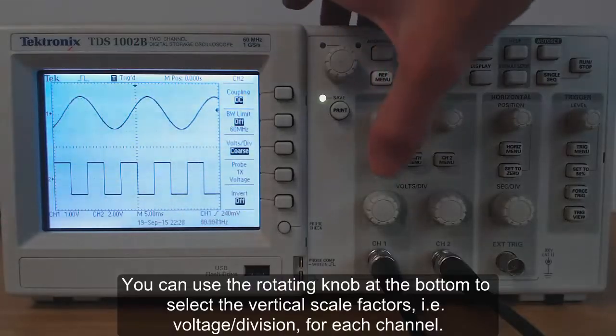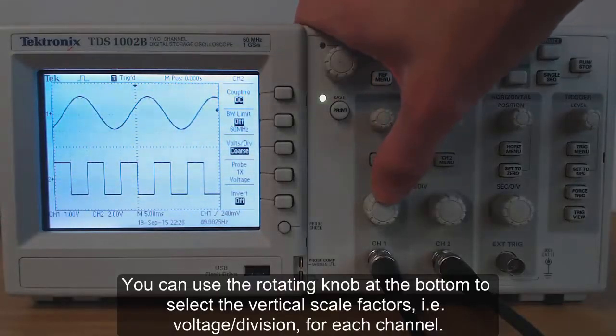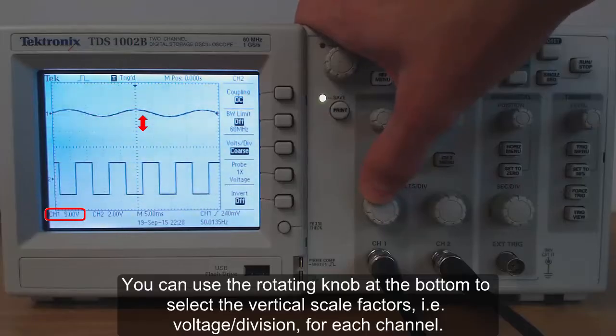You can use the rotating knob at the bottom to select the vertical scale factors. That is the voltage per division for each channel.